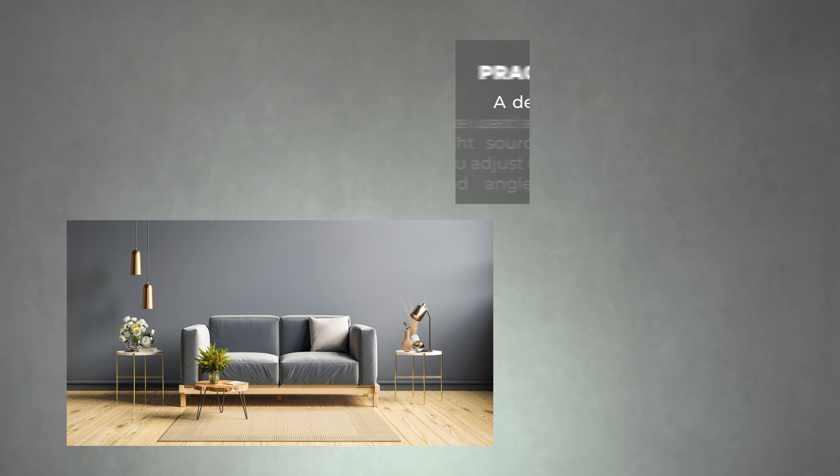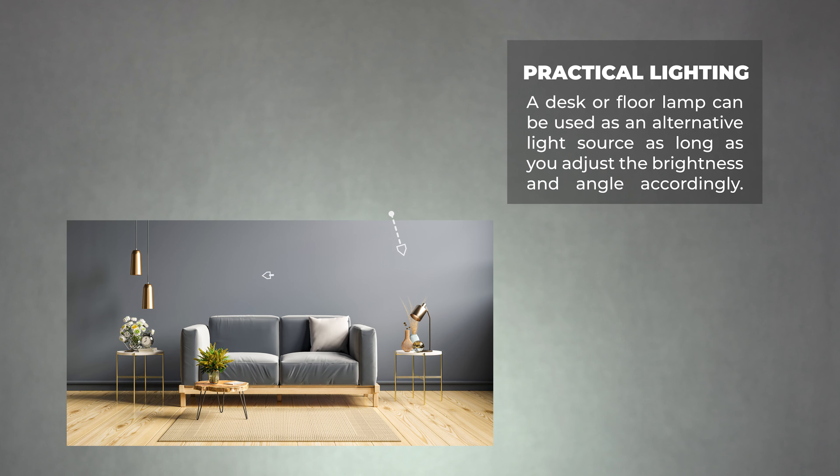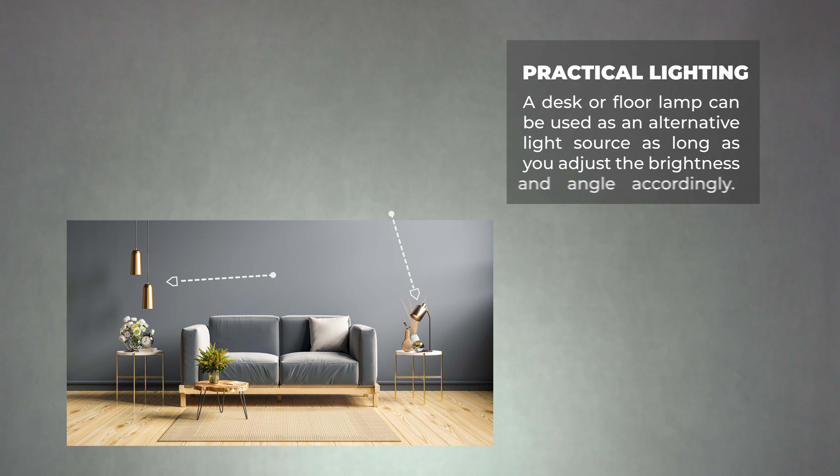Now, if you're on a tight budget, don't worry. You can even use some household items as a lighting source. A desk or floor lamp can be used as an alternative light source, as long as you adjust the brightness and angle accordingly.